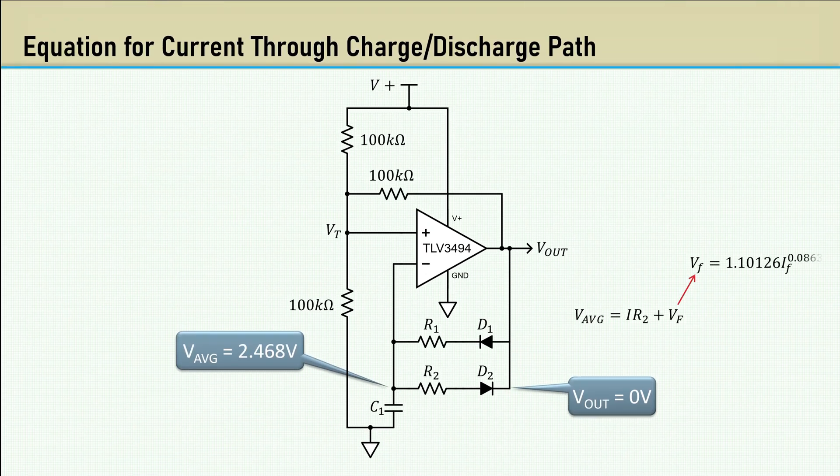We can replace the VF term in the equation with the equation for the diode. But now we have a conundrum. We need to know the current through the resistor and diode, but we can't calculate the current until we have the voltage drop across the diode, which also depends on current.